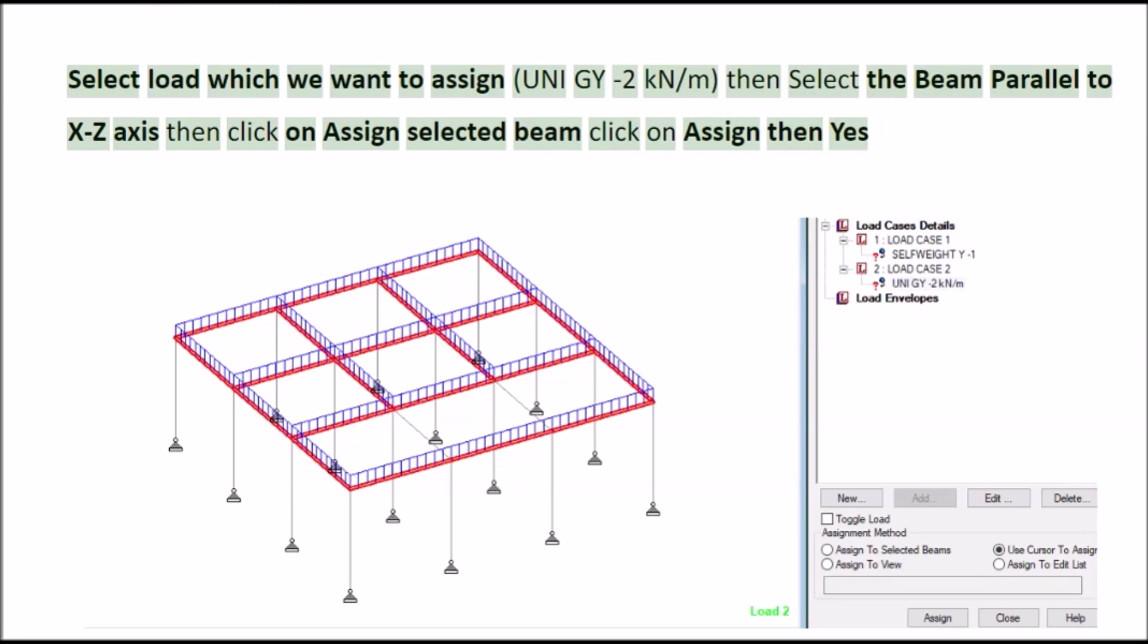Select load which we want to assign. Uni GY dash 2 KN slash M then select the beam parallel to X axis then click on assign selected beam click on assign then yes.